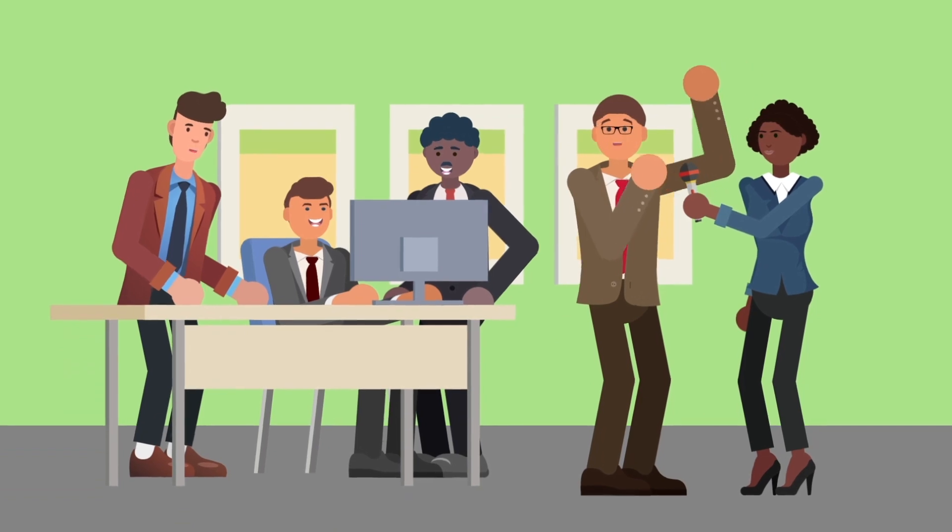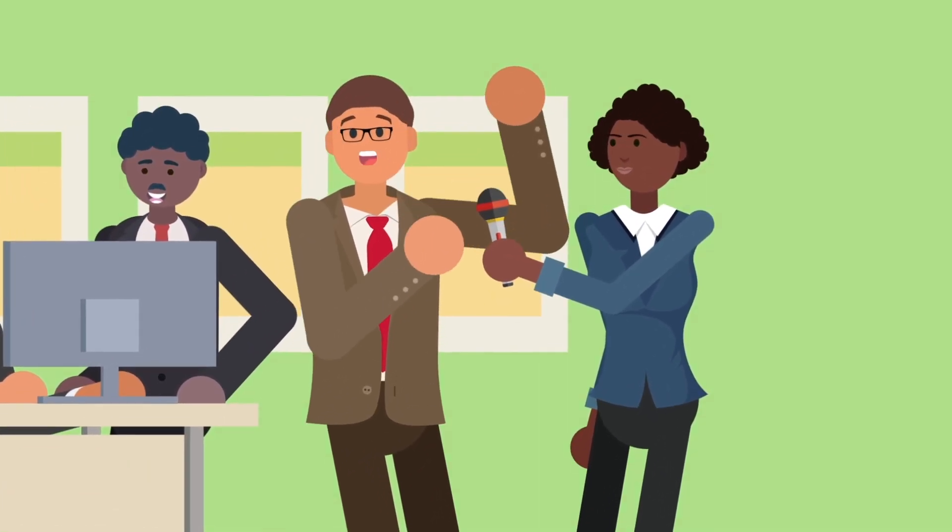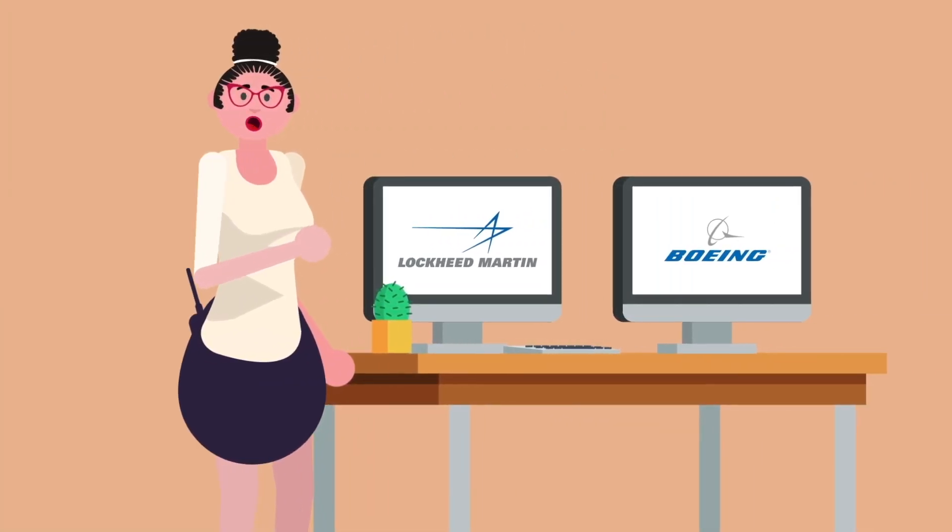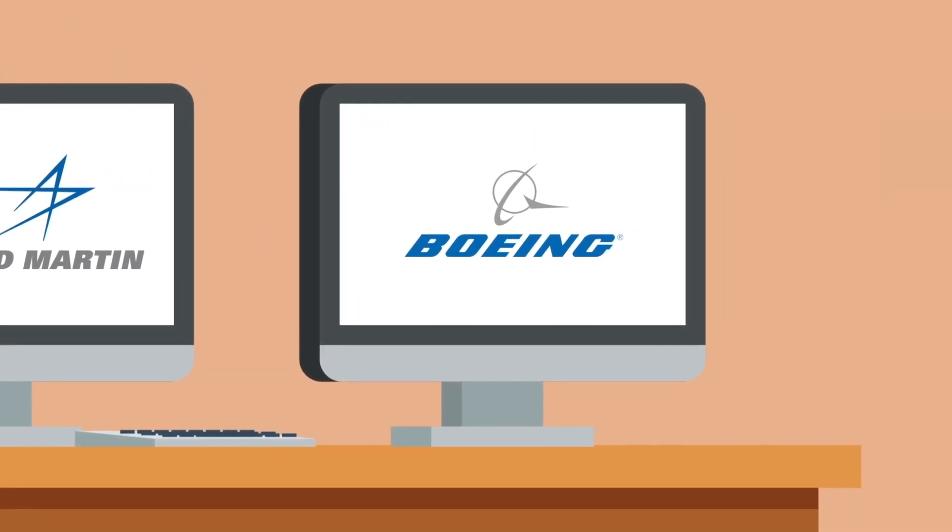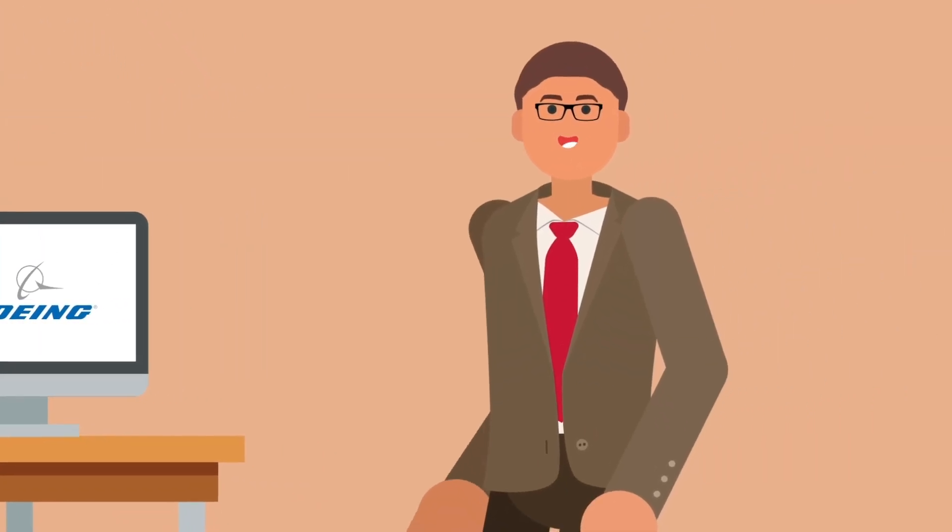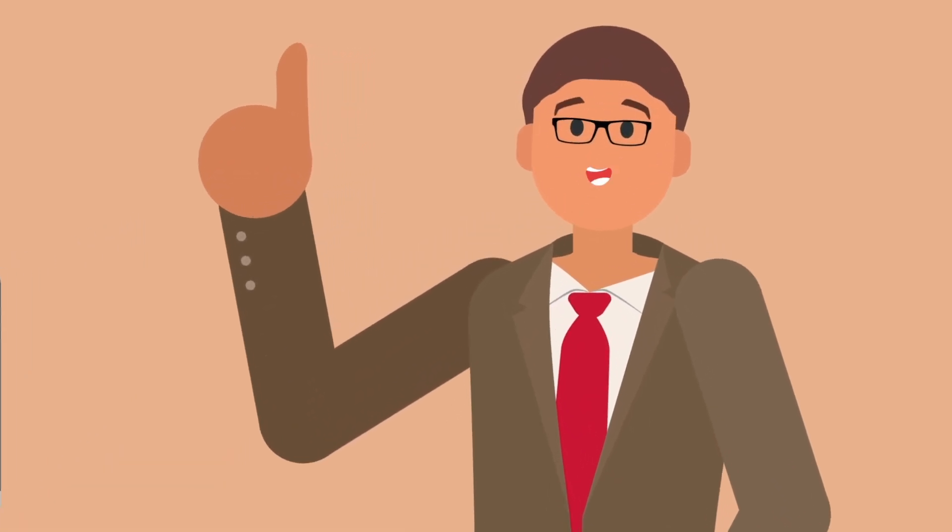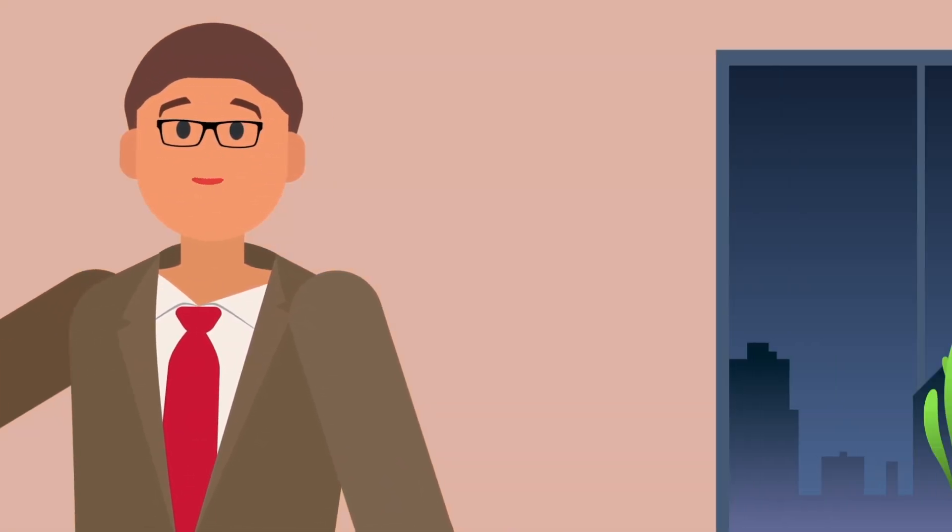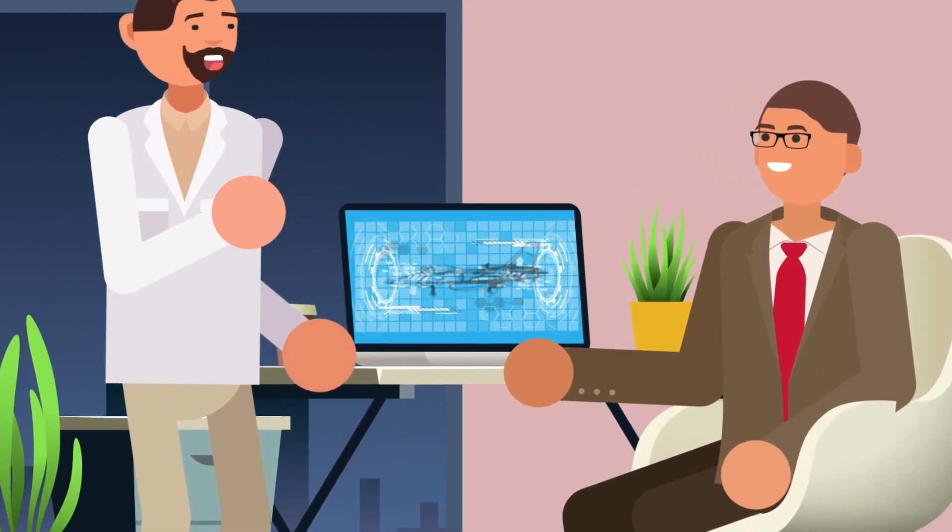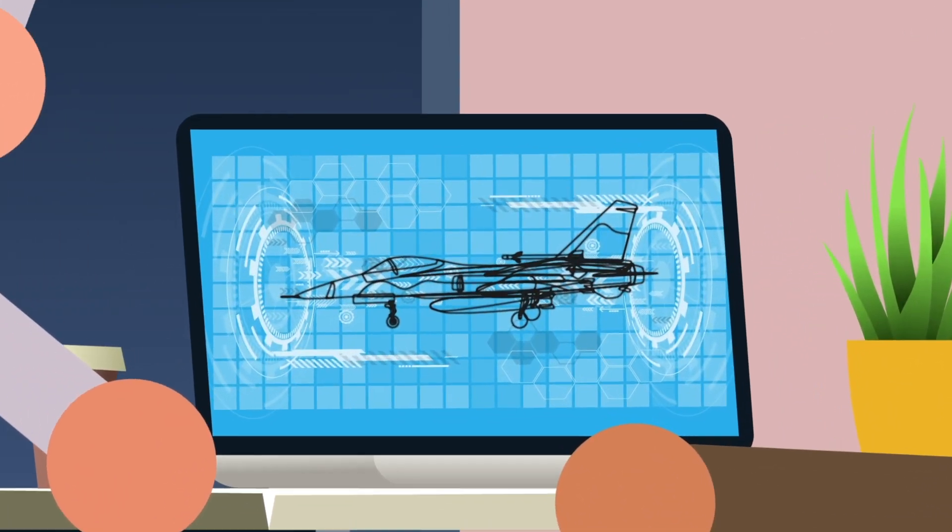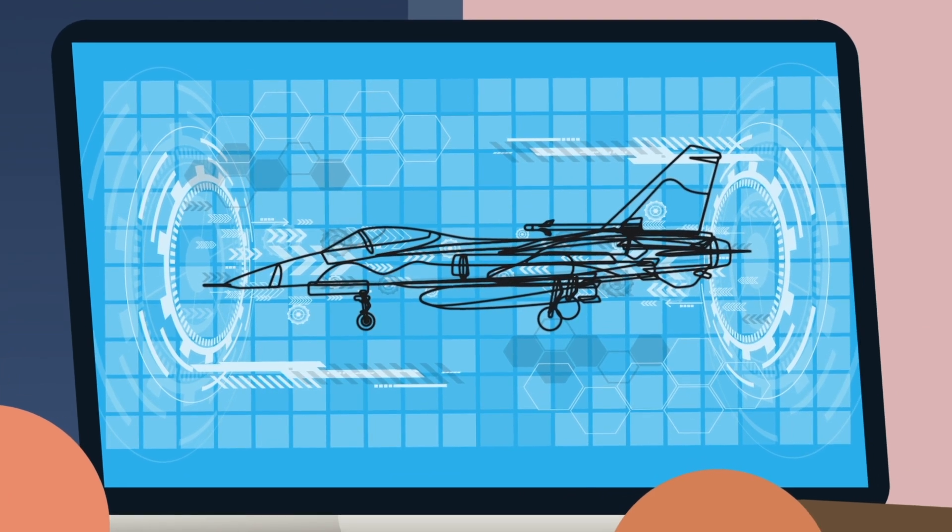Roper even refused to disclose which company built this new fighter jet. In recent decades, US fighter jets have been exclusively designed and built by aerospace giants like Lockheed Martin and Boeing, but Roper did allude to the fact that the field might be opening up to new competitors. This is thanks in large part to advancements in digital technology that has helped shorten the development timeline for advanced fighter jets and will revolutionize the aerospace industry.